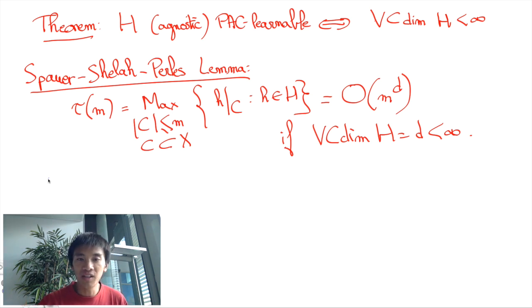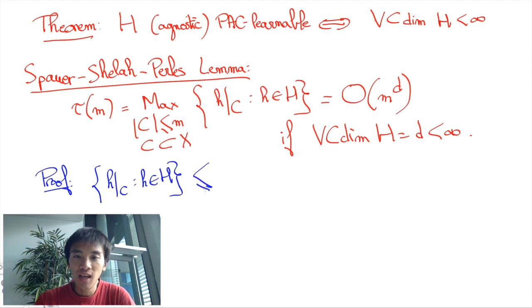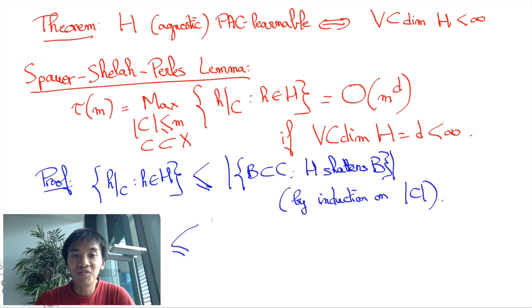Intuitively, this is a consequence of the fact that no subset of size D plus 1 of C is shattered. This imposes great restrictions on what the restrictions of hypothesis to C can be. In fact, it can be proved that the number of restrictions of a hypothesis H of H to C is no more than the number of subsets of C of size D.